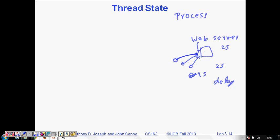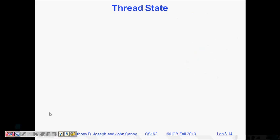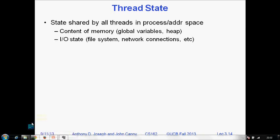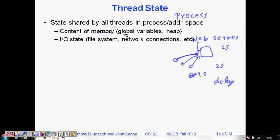What does a thread need? State shared by all threads. In a process, all the address space—if it spawns multiple threads, the address space is shared. The content of memory like global variables, the heap memory, they are all shared. If you have some global variables, all the threads can change that.